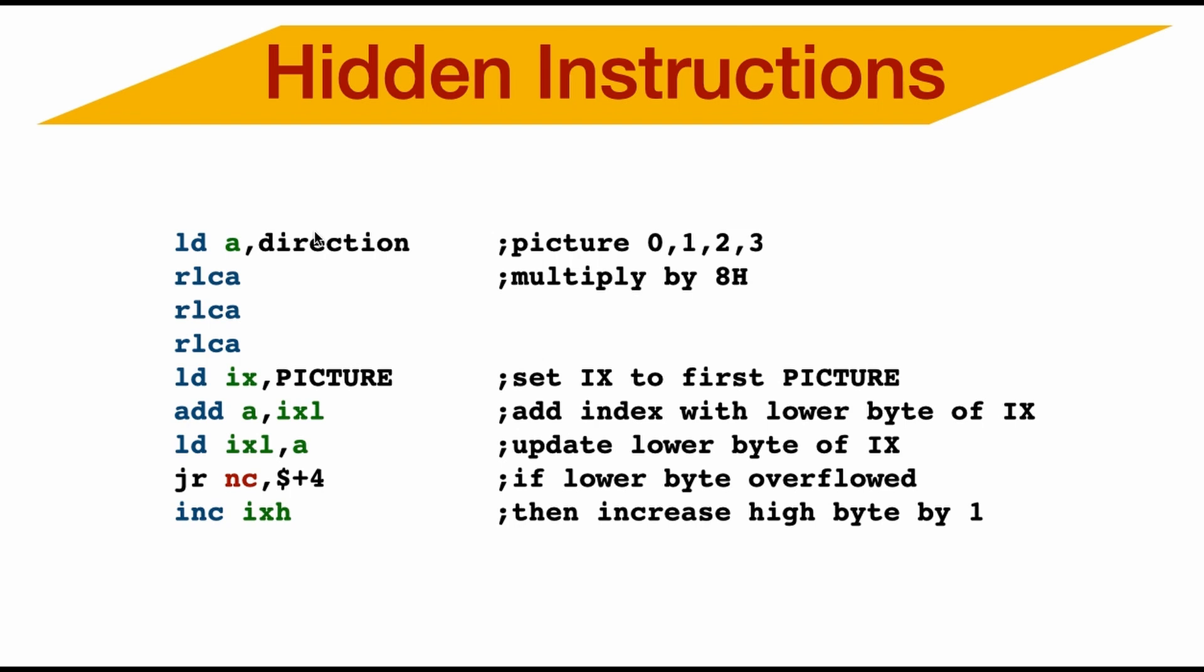And here's the code. First, I get the direction one, two, three or four. I multiply that direction by eight to index it properly. I load IX to point to the picture data. And then I add A, which is the index, to the lower byte of IX, IXL. And this is the hidden instruction.